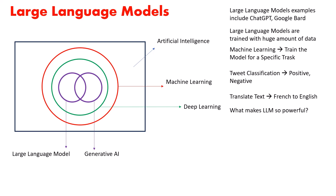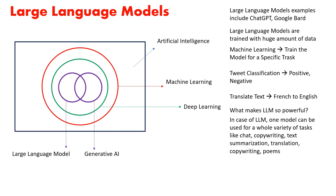What makes large language models so powerful? One LLM can be trained for a whole variety of tasks. Large language models can do copywriting, text summarization, text translation, write bullet points, write letters, prepare scripts, do script writing, and write stories. One model trained for a whole variety of tasks — whereas in traditional machine learning, each model does only a specific task.